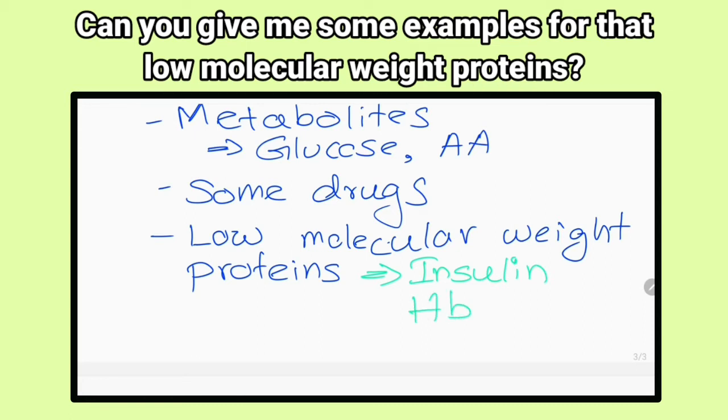Insulin is taken up by proximal convoluted tubular cells and their carbon skeletons are used to synthesize glucose if needed. When there is free hemoglobin in blood, they are freely filtered and catabolized in proximal convoluted tubular cells. It will cause renal tubular toxicity.